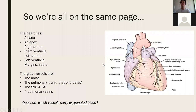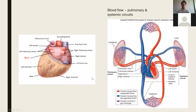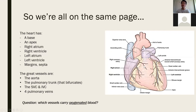The heart has a base and an apex — the apex is the pointy bit at the end. The base is at the back where all the vessels come in and out. The heart has a right atrium, right ventricle, left atrium, and left ventricle, and several margins — the inferior margin and the obtuse margin. Between each of the ventricles there is a septum, and between the atria and ventricles there are valves.